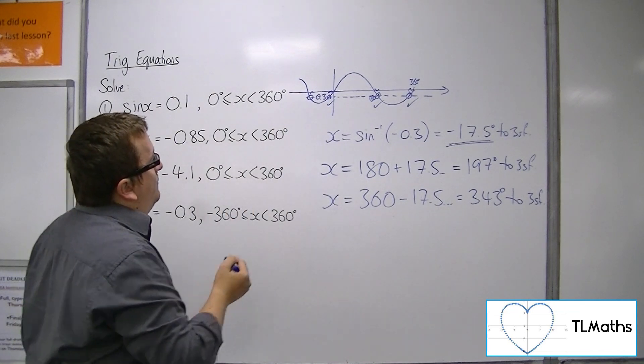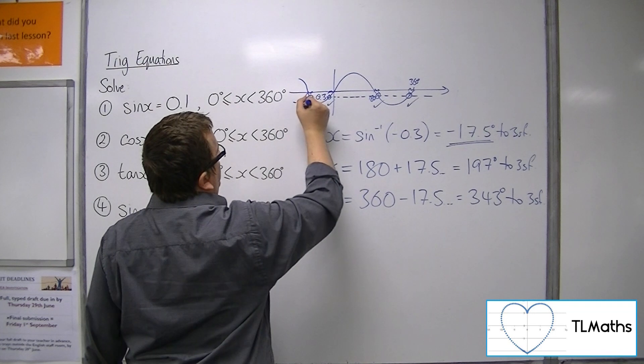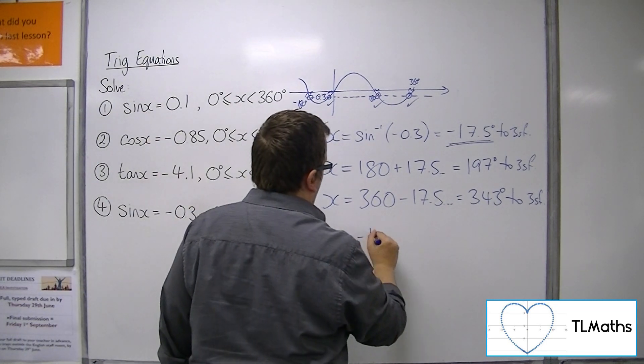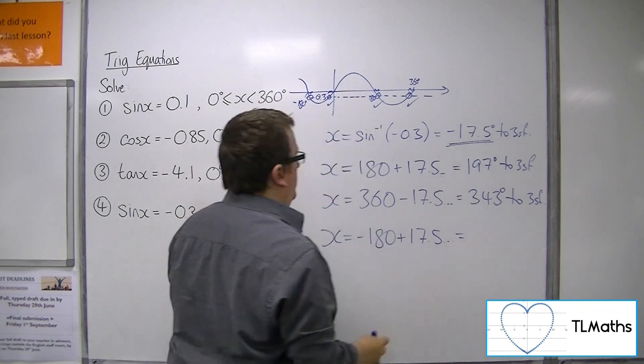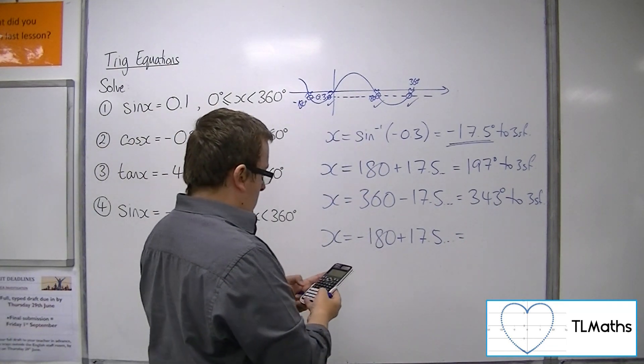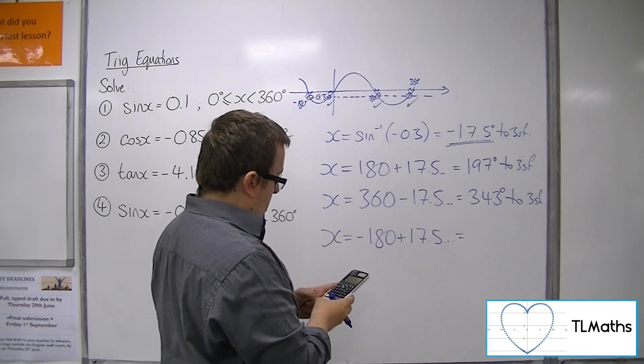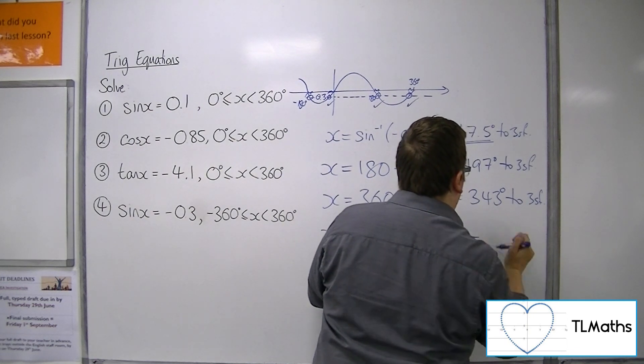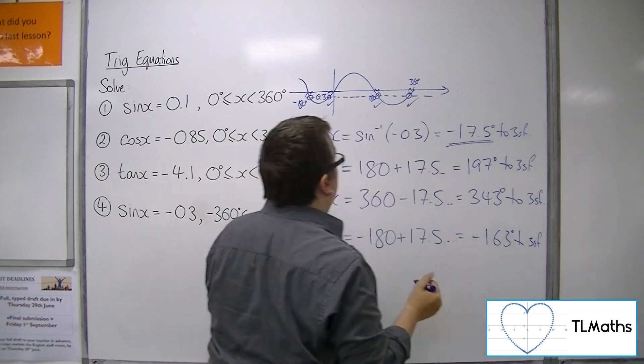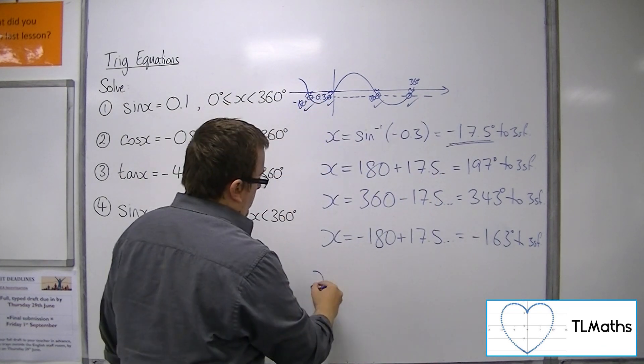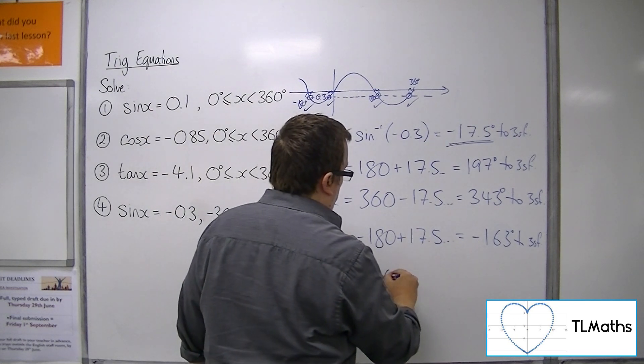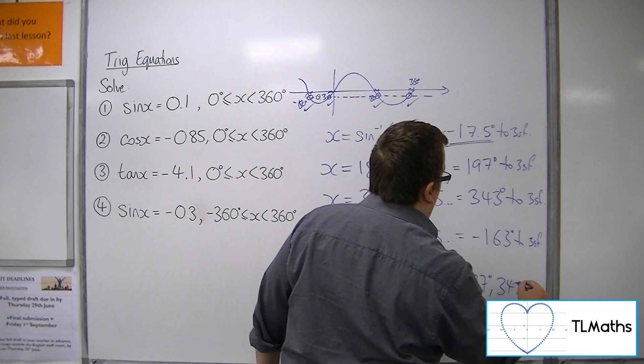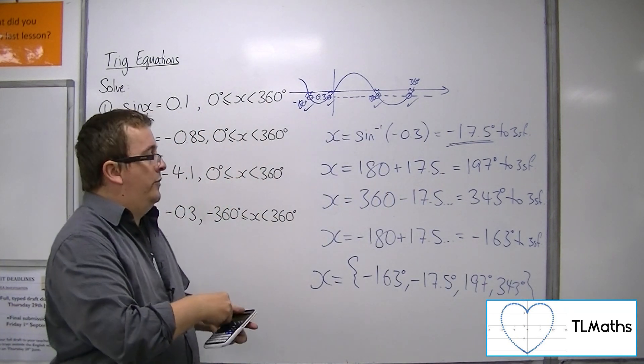But there is this extra solution there. Now that is the 17.5 away from the minus 180. So minus 180 take away the inverse sine of minus 0.3 gets me minus 163 to 3 sig fig. And so that is that solution there. So we have our four solutions: minus 163 degrees, minus 17.5 degrees, 197 degrees, and 343 degrees, all given to three significant figures.